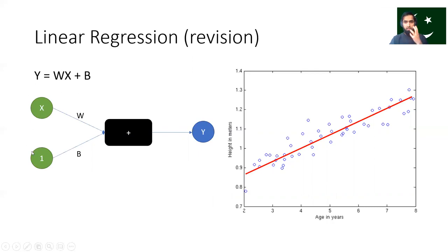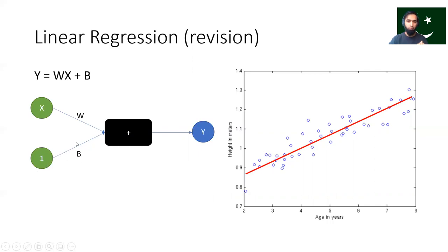I want to show this model in a pictorial and graphical form. We have input x — in this case, age in years — and a bias input of 1, so that b multiplied by 1 equals b. When w is multiplied by x, we get wx, and they are added together to give output y. After training, when we know the values of w and b, we can make predictions.